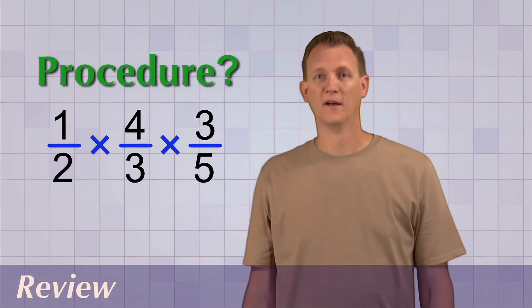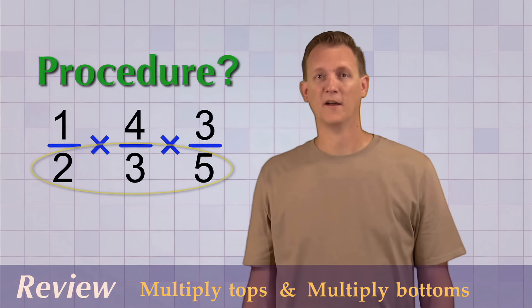The procedure for multiplying fractions is to multiply the top numbers to get the answer's top number, and multiply the bottom numbers to get the answer's bottom number.